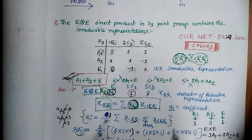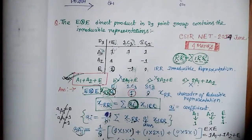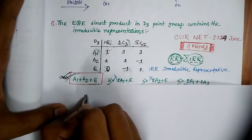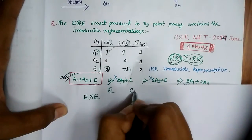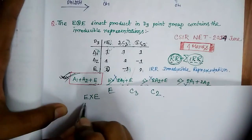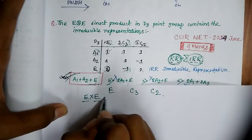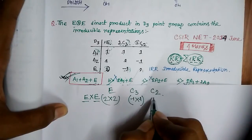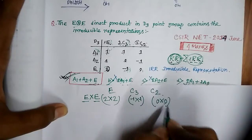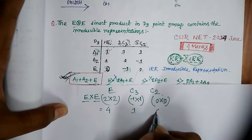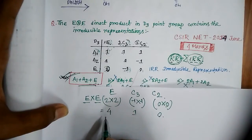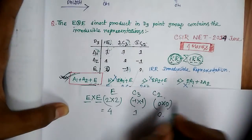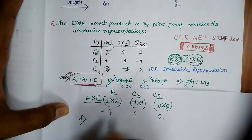Now I will tell you how to solve this question very quickly. From the question, E × E gives characters: 2×2=4 for E, (−1)×(−1)=1 for C3, and 0×0=0 for C2. So the reducible representation characters are 4, 1, 0. Now just look at the answer choices A, B, C, D and check which one matches by adding up the corresponding IRR characters.